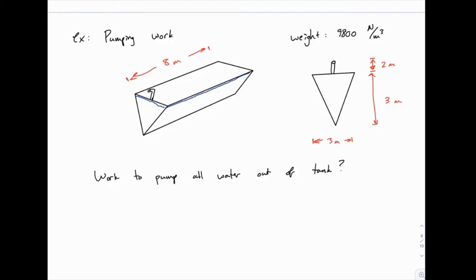Here's our last example of the work required to pump water out of a tank, and we're going to use the things we've built to this point. This one will be very similar with just a few small changes. This tank is shaped like a triangle, like a trough, and if you look at it from the end you see a picture like this where the shape is triangular.